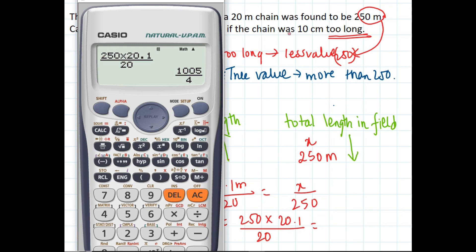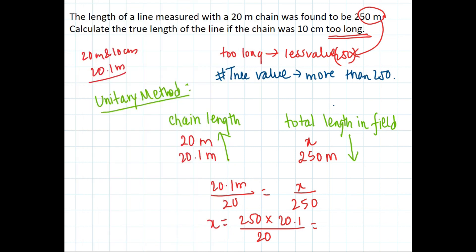Calculating: 250 into 20.1 divided by 20 gives us 251.25 meters. So our answer is 251.25 meters. We can verify: the too long chain gave us 250 meters, and the actual true length is 251.25 meters — which is more than 250, as expected. Thank you for watching.